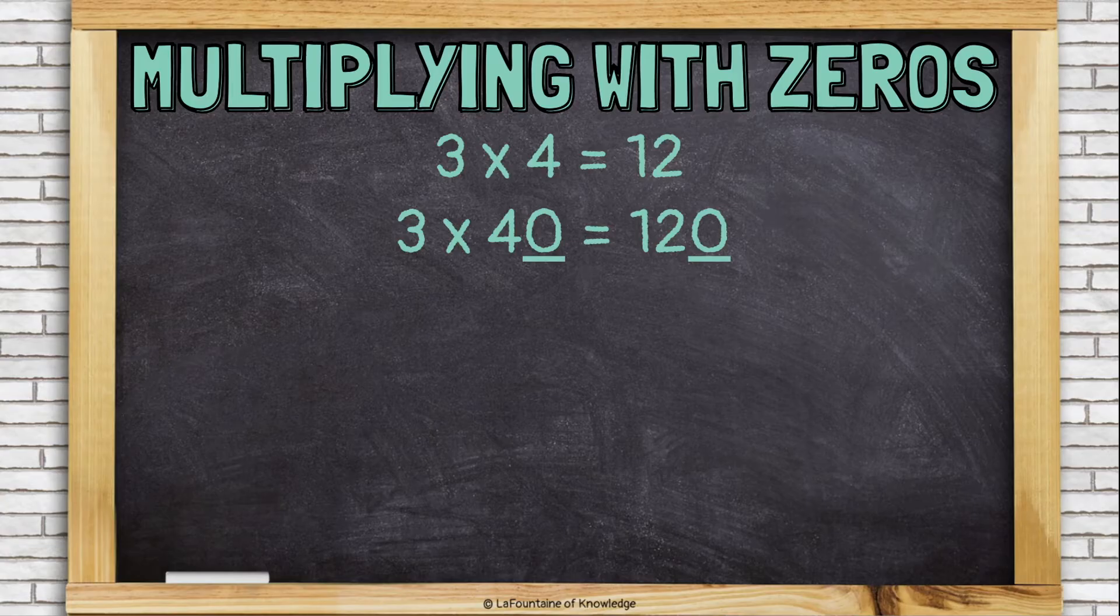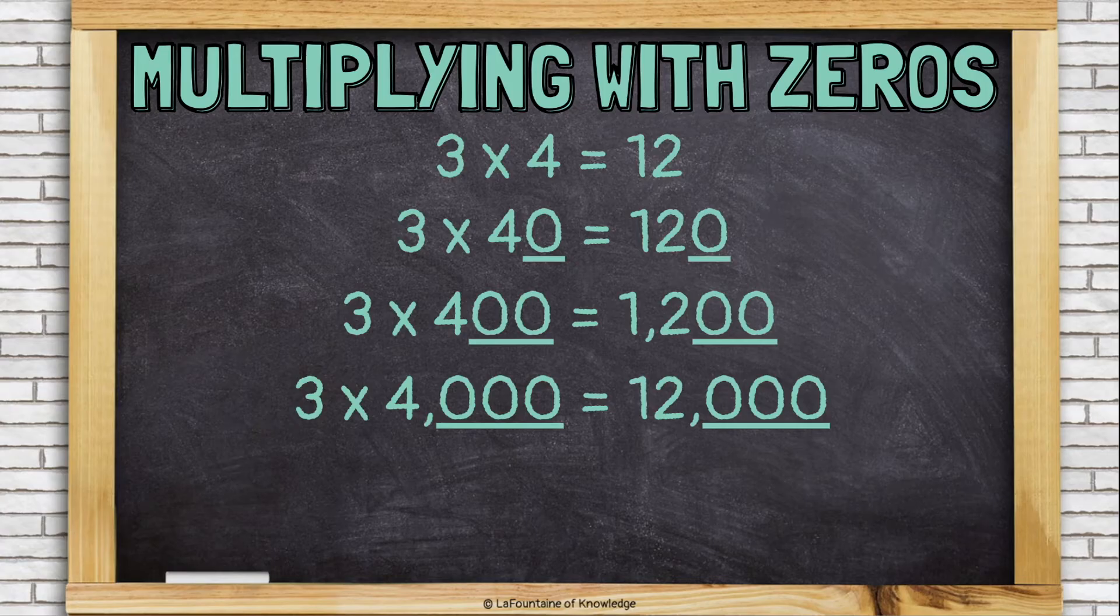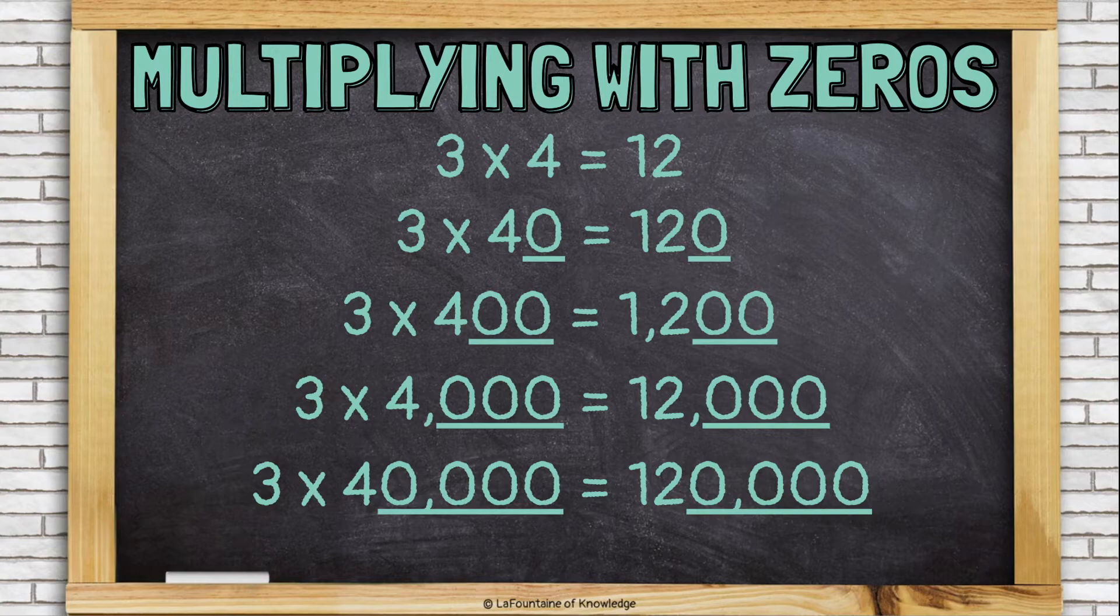We can multiply 3 times 4 to get 12. 3 times 40 to get 120. If we do 3 times 400, we add another zero. Now we have 1,200. 3 times 4,000, we just add another zero, 12,000. 3 times 40,000, just add another zero, and that gives us 120,000.